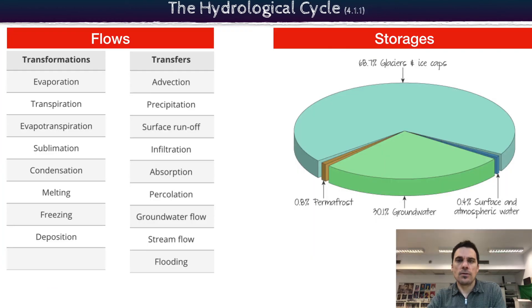To break that down into a bit more formal language, we can really focus on flows and stores. Flows come in a couple different categories here. Transformations are when they actually change the form, transform. So water freezing, you go from liquid to solid. Water melting, solid to liquid. Sublimation, solid to gas. You really change the form and you shift it.